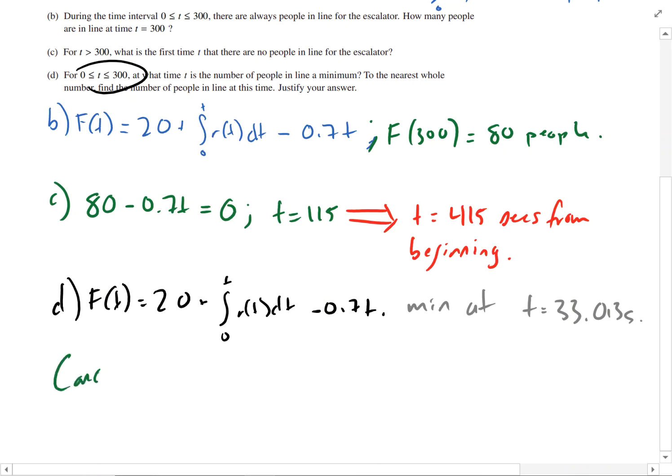So candidates for F min equals 0, 33.013, and 300.